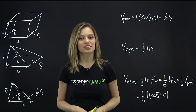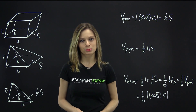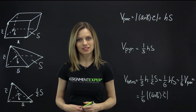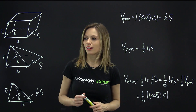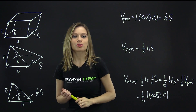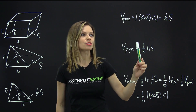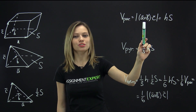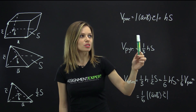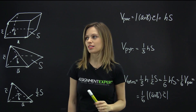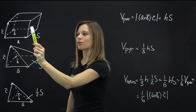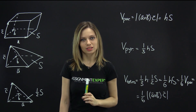Recall that the absolute value of the scalar triple product of vectors represents the volume of a parallelepiped built on these vectors. We have a parallelepiped built on vectors A, B, and C. We know that its volume is equal to the absolute value of A cross B dot C. We also know that its volume is equal to H times S, where H is the height of this parallelepiped and S is the area of its base, which is a parallelogram.